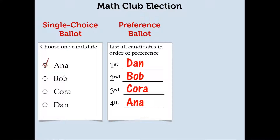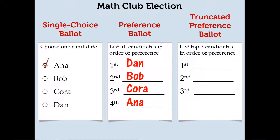The last type of ballot we're going to see is a truncated preference ballot. It's pretty much a preference ballot, but here you're just choosing and listing the top three candidates in order of preference. For example, a voter might say they prefer Cora as their favorite, followed by Bob, and then Anna.